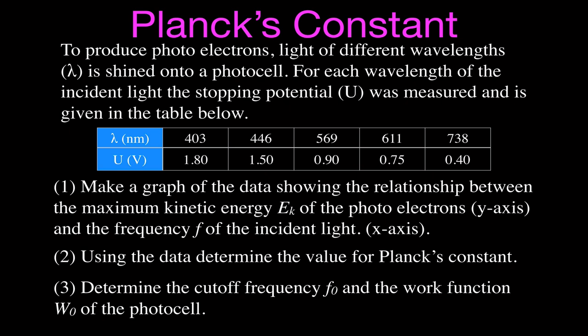We have five different wavelengths. The wavelengths are increasing as we go from left to right. This is the stopping potential that was measured to find the potential needed to stop those photoelectrons from reaching our anode. You will notice that as we go across, the wavelength increases but the stopping potential decreases. That's because as the wavelength increases, the energy of the incident photons is decreasing, so we have a lower stopping potential.